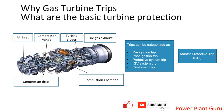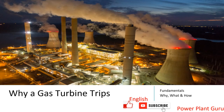Hello friends, welcome to Power Plant Guru YouTube channel. In today's video we will see why a gas turbine trips, or for instance why any turbine trips. What are the basic protections provided in turbines to prevent catastrophic failure. A gas turbine may trip on various conditions like over temperature, over speed, vibration high, control system failure, turbine compartment fire, gas leak, etc. There are so many things, but all those can be categorized and understood one by one.